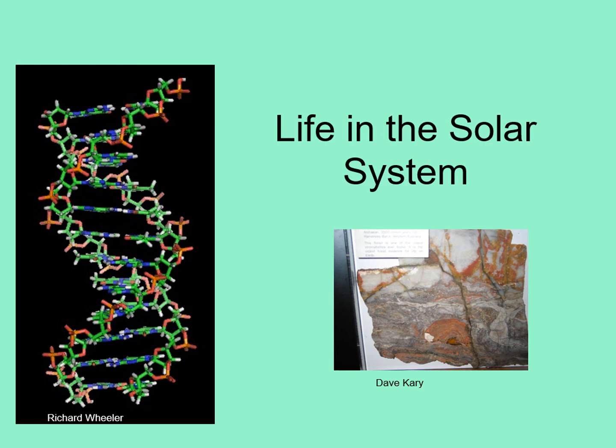For our final chapter, we're going to give a quick summary of what is known about life in our solar system. For all of the hype in movies and elsewhere, we only have firm evidence of life in one place in the solar system — the Earth. So we're going to have to see what our experience with life on Earth can tell us about the possibility of life elsewhere in the solar system.